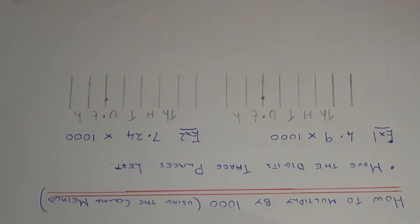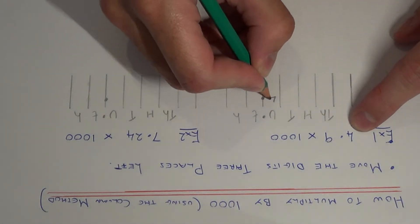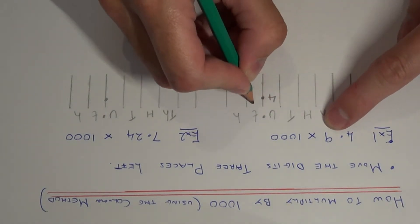And remember, the decimal point won't move. So let's have a look at example one. So we need to work out 4.9 times 1,000. So we have 4 units and 9 tenths.